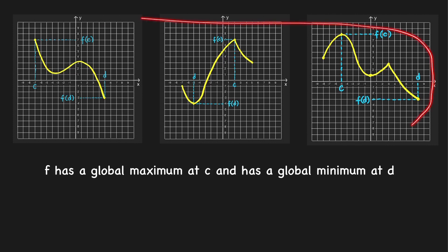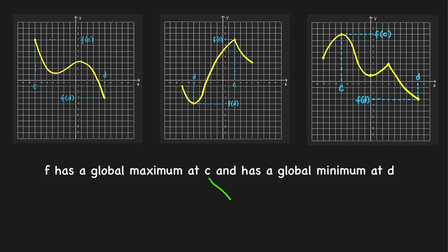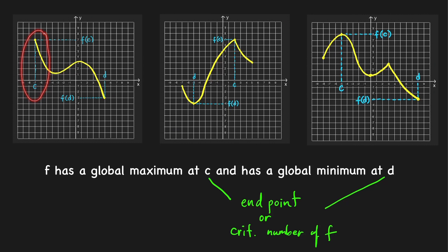Looking at these three graphs, what can we say about the x-values at which the global extrema occur? As we can observe, every global extremum occurs either at an endpoint or at a critical number of f. If we look at the first graph, the global maximum occurs at the left endpoint and the global minimum occurs at the right endpoint. For the second graph, the global maximum f(c) occurs at a critical number where the derivative does not exist because we have a corner point.